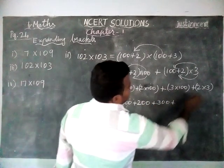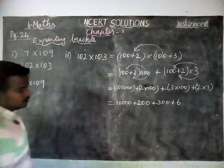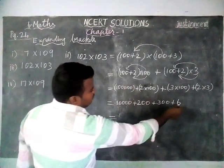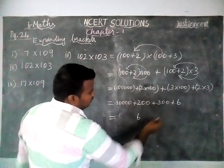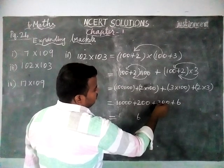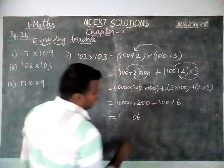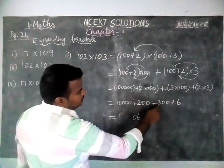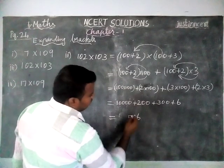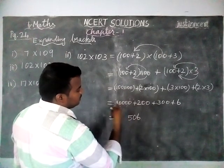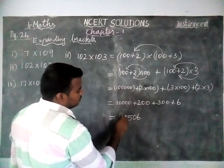Adding these together: 10,000 + 200 + 300 + 6. In the ones place we have 6, tens place 0, hundreds place 2 + 3 = 5, and 10,000 place is 1. So the answer is 10,506.